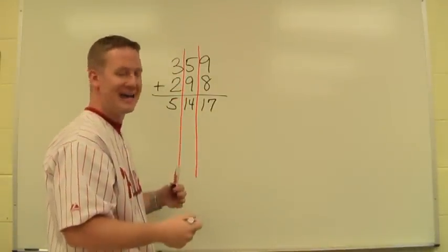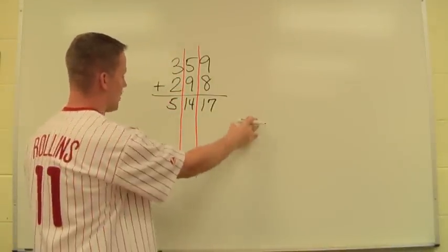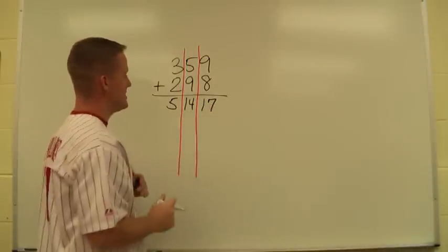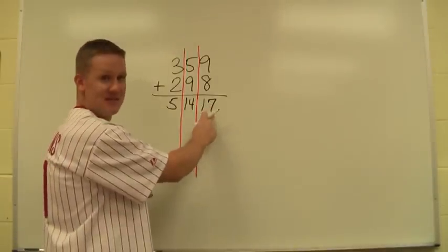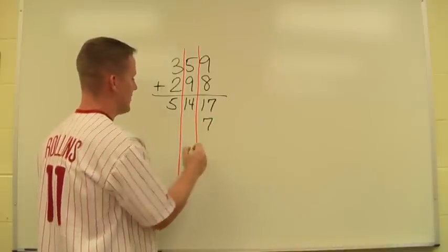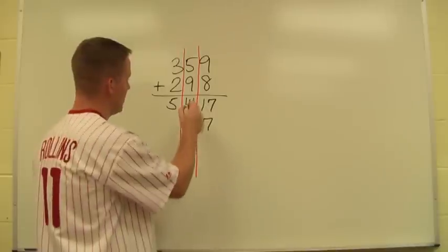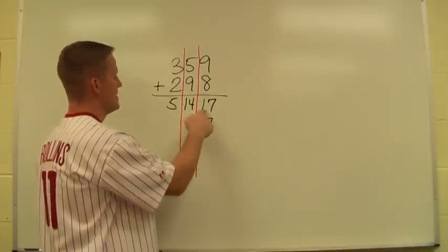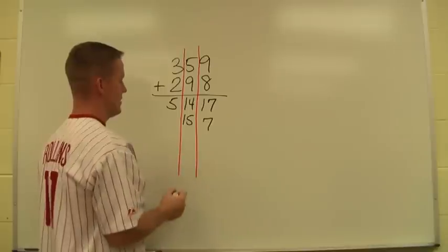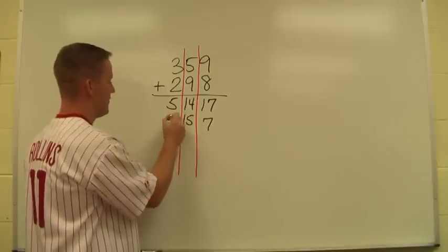Now I go back and I fix each column as I work from right to left. So with 17, the 1's place can stay, since this is the 1's column, so I can keep a 7. The 1, which is actually a 10, has to come over here to the tens. So instead of 14 tens, now I have 15 tens. So I keep that and I bring the 5 down.